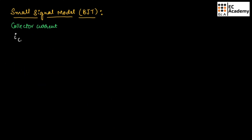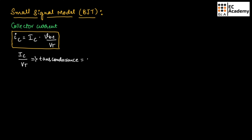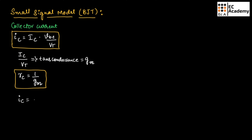So the collector current small IC equals capital IC into VBE divided by VT. Here, IC divided by VT is known as transconductance, represented as GM. Output current divided by input voltage is conductance, hence the name transconductance. The collector resistance RC can be given as 1 divided by GM. We can also write the collector current as GM into VBE, since IC divided by VT is GM.